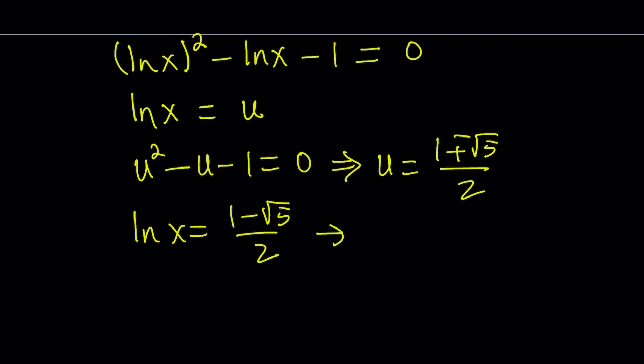So we can write this as ln x equals 1 minus root 5 over 2. That's going to give us one of the solutions. If you think about the definition of ln, this is base e. So we can write it as e to the power of something. So x can be written as e to the power of 1 minus root 5 over 2.